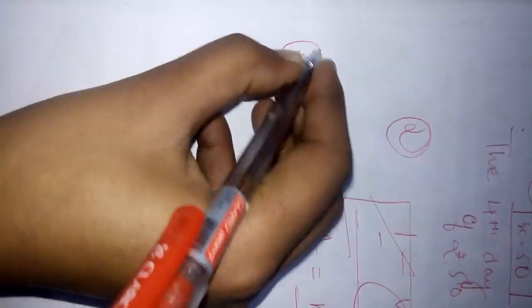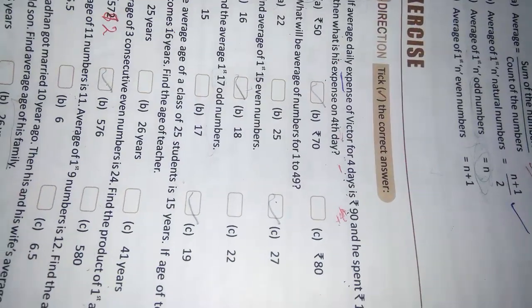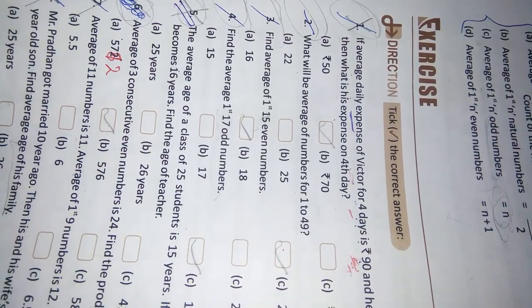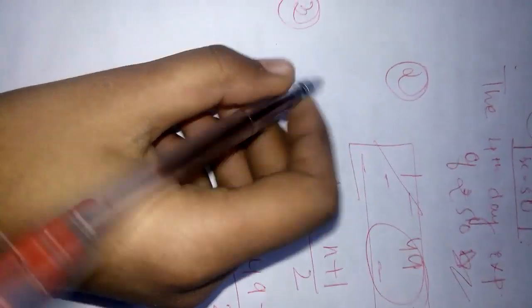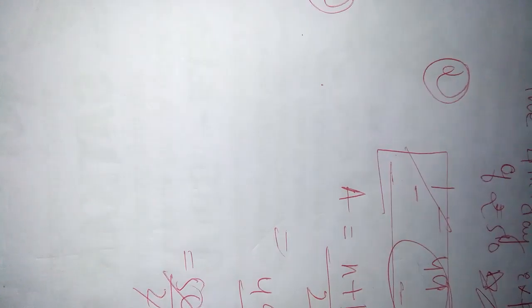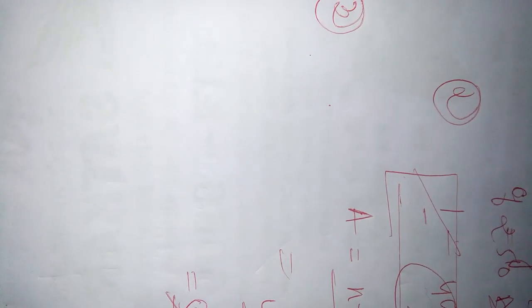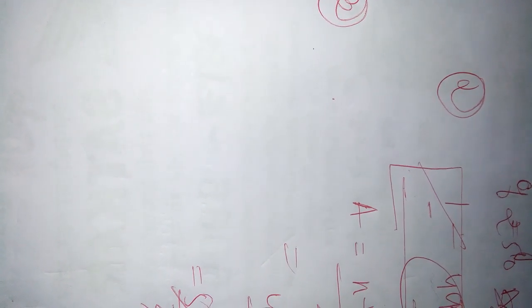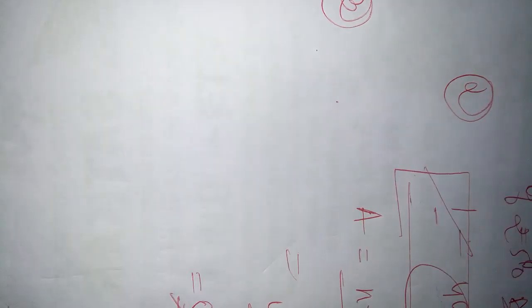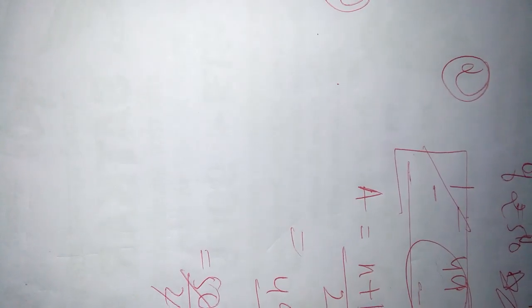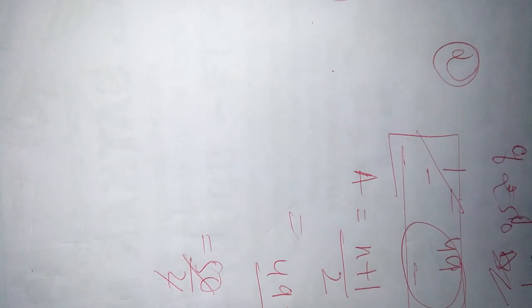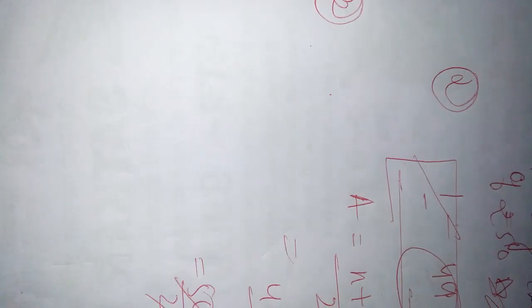Question number 3. It is saying that, find the average of first 15 even numbers. We won't need to write the even numbers. We will directly start the question. 15 is an odd number. But, the question is asking about even numbers. So we are going to use even number formula. The even number formula was n plus 1.